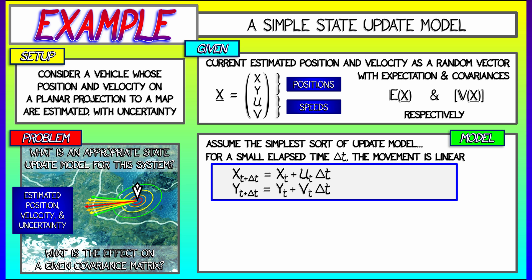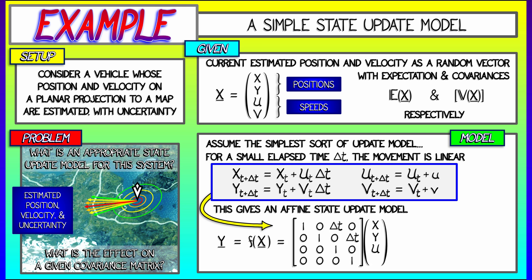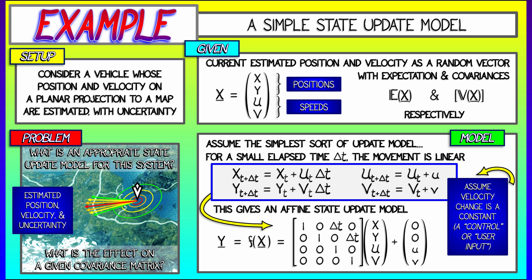The same equation works for y using the vertical component of the speed. And then let's say that the speeds, the horizontal and vertical speeds, update by some control input. Let's say little u and little v. This gives us an affine state update model.